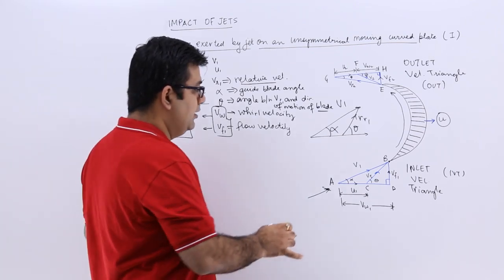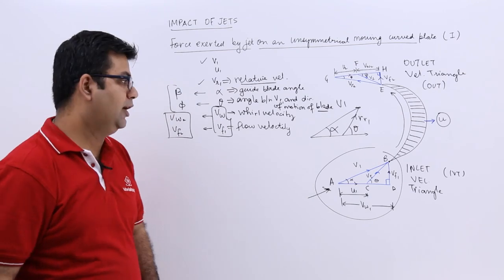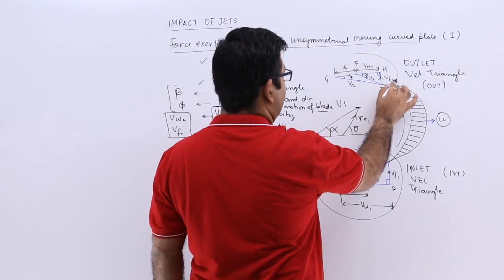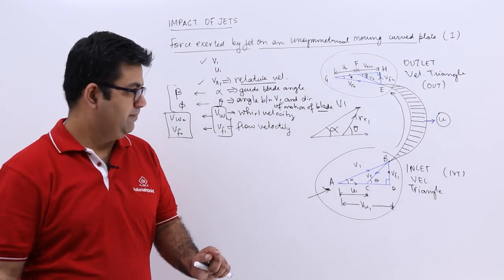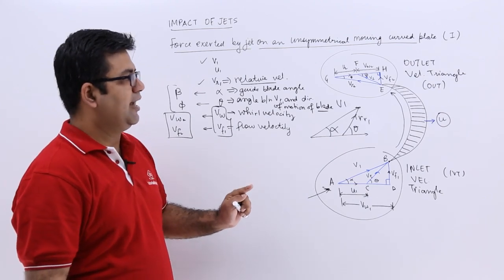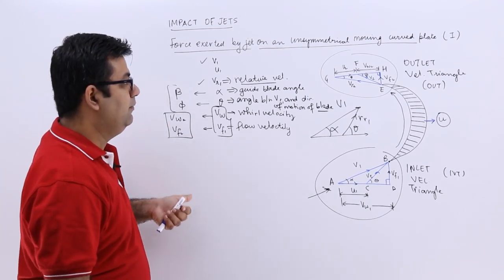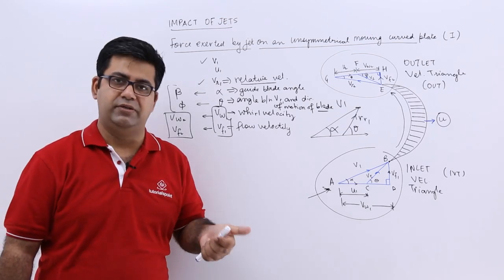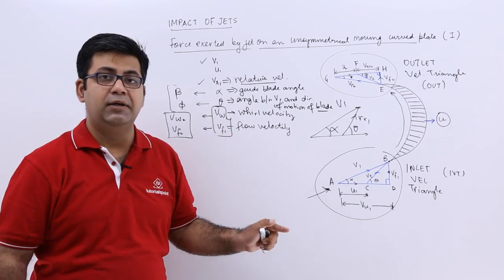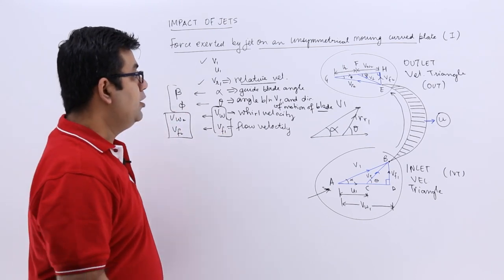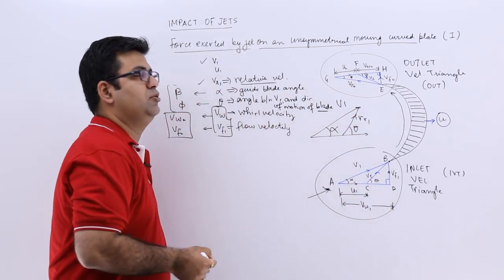So remember this triangle as the IVT or inlet velocity triangle, and the other as the outlet velocity triangle or OVT. I hope you have understood and will remember these terms that will be used while solving questions. Now let's move on to the second part of the same topic and look at some calculations based on these two triangles.